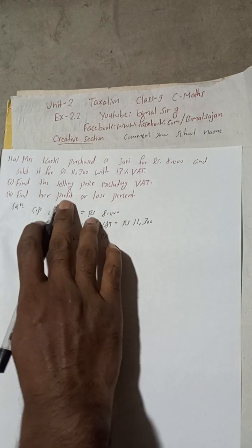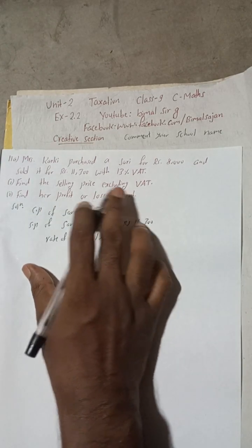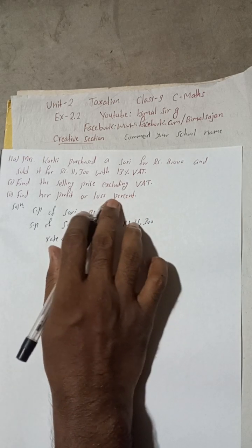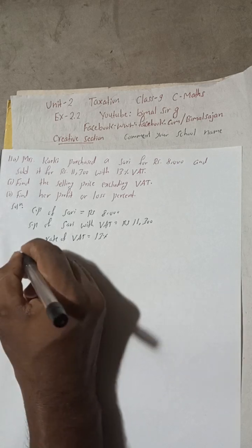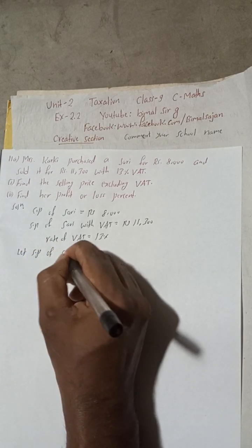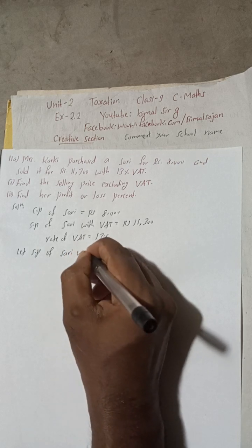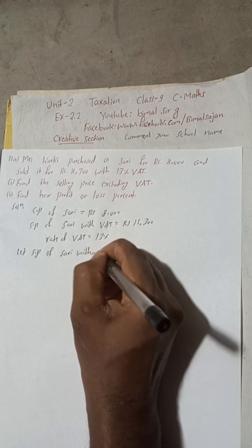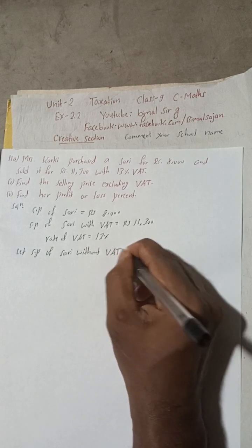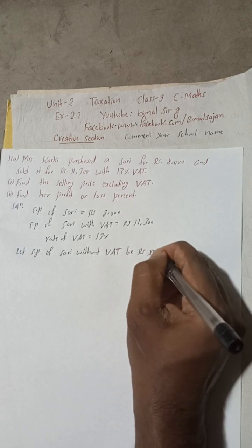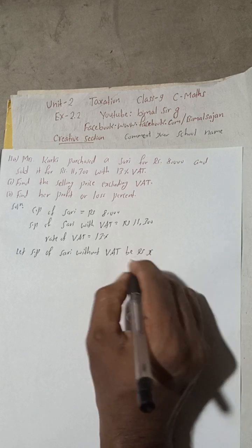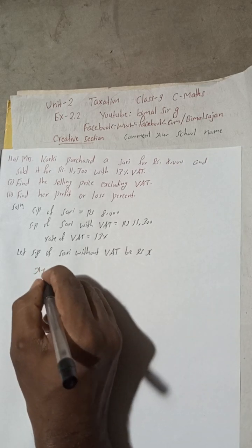Now find the selling price excluding VAT, means without VAT. So let SP of the sari without VAT be Rs. x. Let SP of sari without VAT be Rs. x.